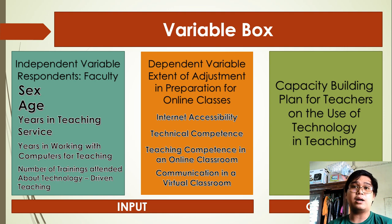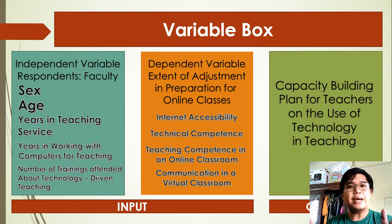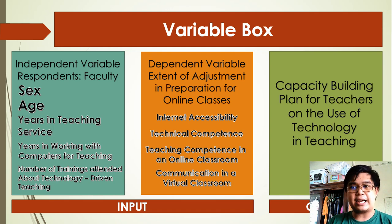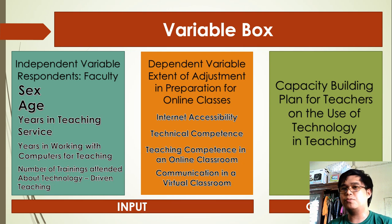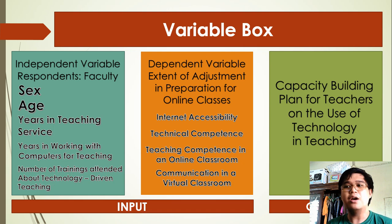Now, the dependent variable of the study includes the extent of adjustment in preparation for online classes. Guided by Ogburn's theory, this will refer to internet accessibility, technical competence, teaching competence in an online classroom, and communication in a virtual classroom. These four parameters will help us assess the extent of adjustment among teachers in preparing for online classes.